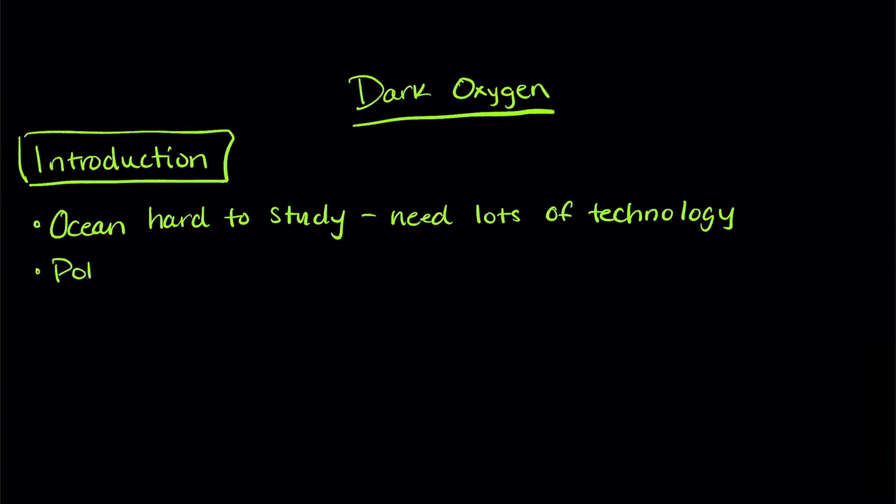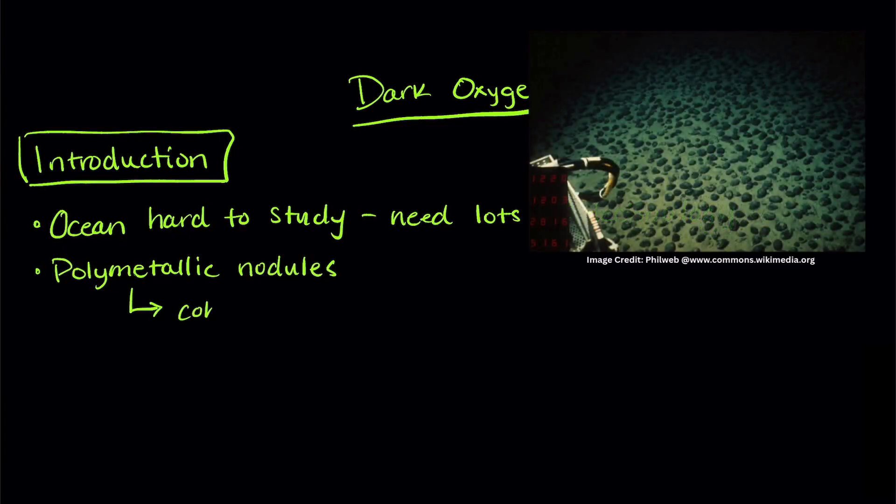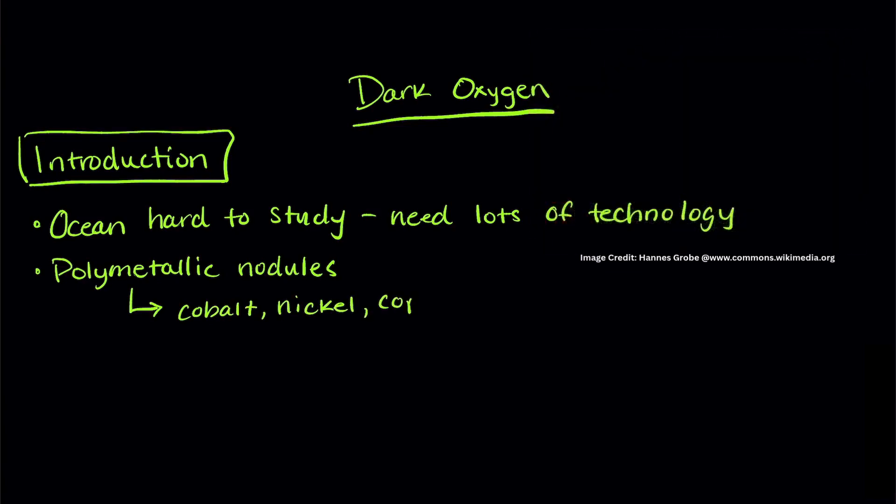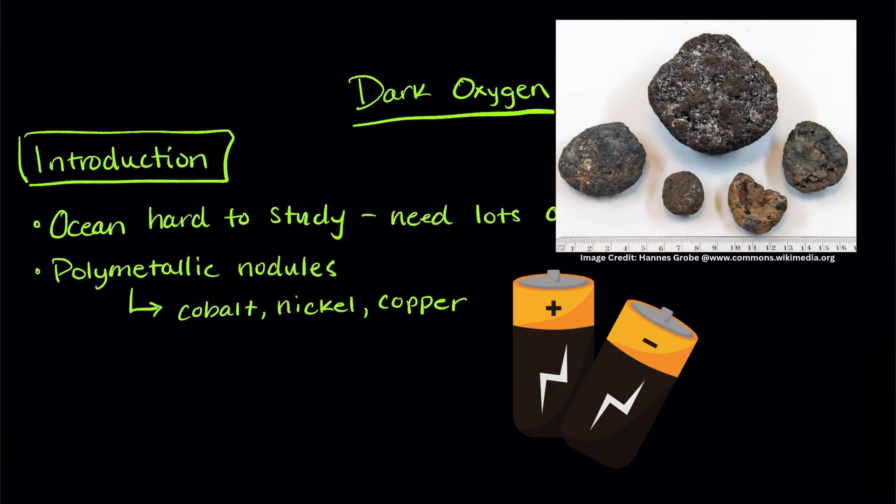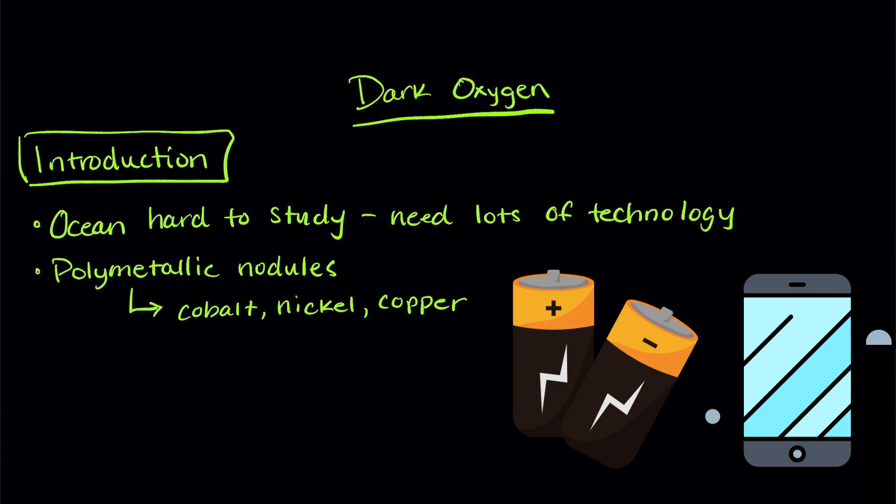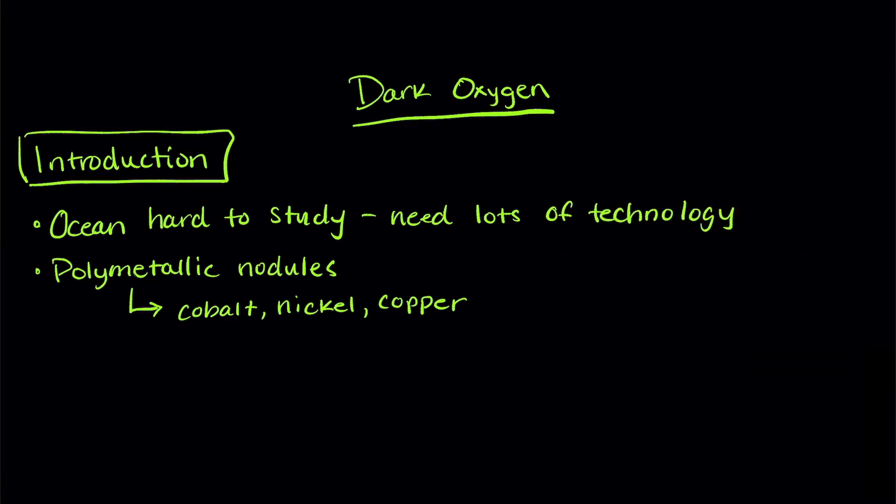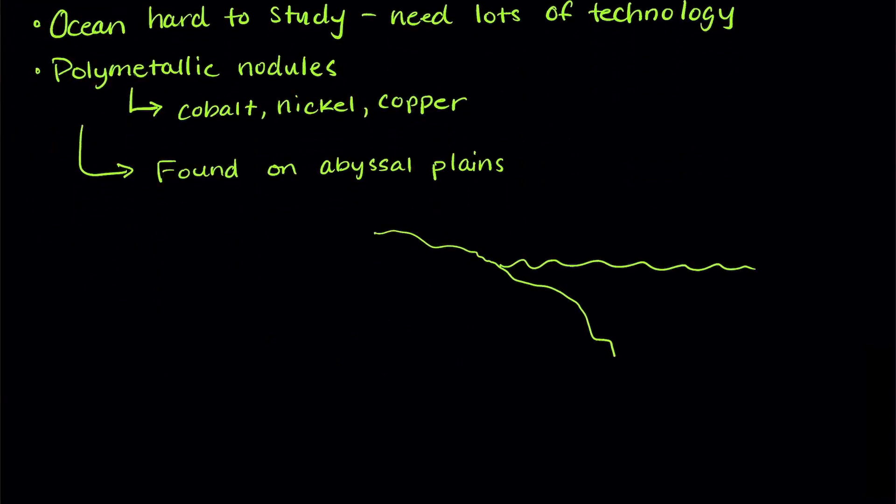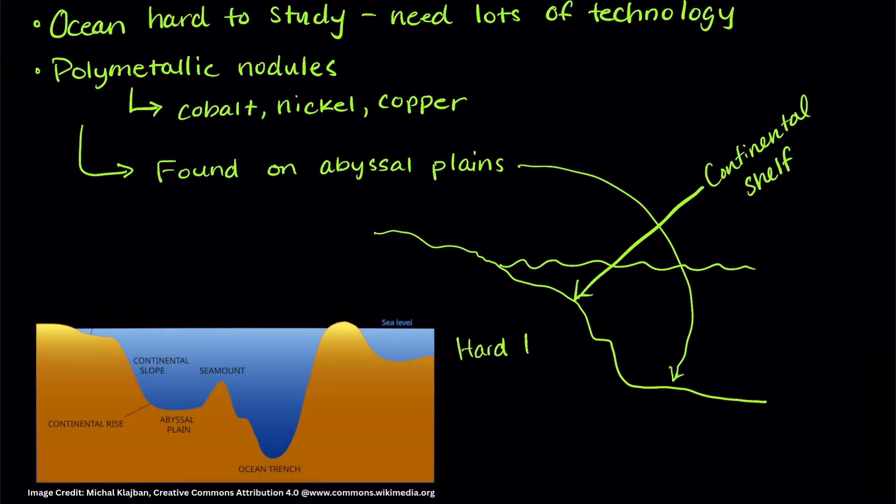One thing researchers have found are called polymetallic nodules. They look like rocks, but they actually contain cobalt, nickel, and copper. You know, the metals that are in your batteries and your cell phone. They form over long periods of time on the abyssal plains. That's the flat part of the deep ocean. We don't know a lot about this area, especially the chemical processes that happen there.